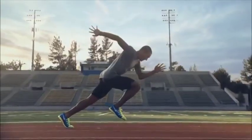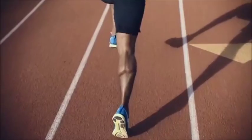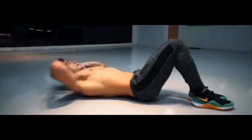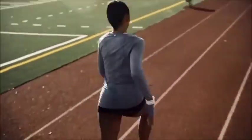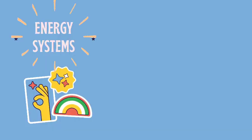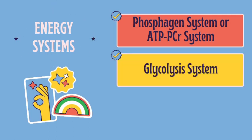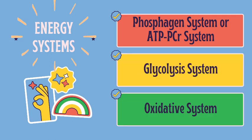Our body has three main methods for using energy to sustain itself and fuel exercise. These physiological pathways are called energy systems, which are the following: Number 1, the Phosphagen system, also known as the ATP-PCR system. Number 2, the Glycolytic system. And Number 3, the Oxidative system.